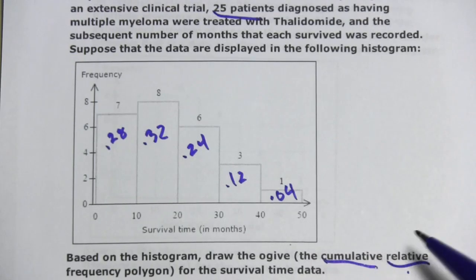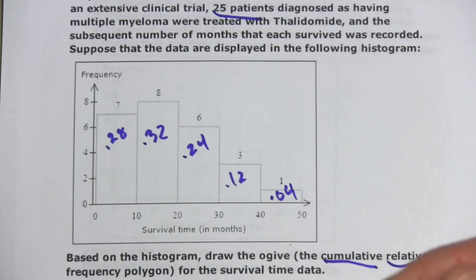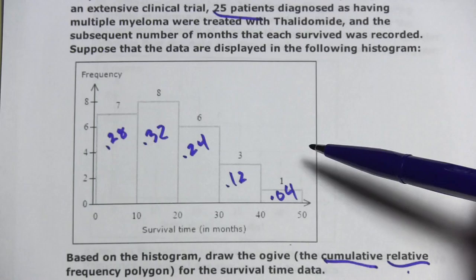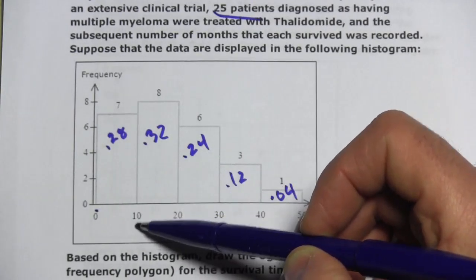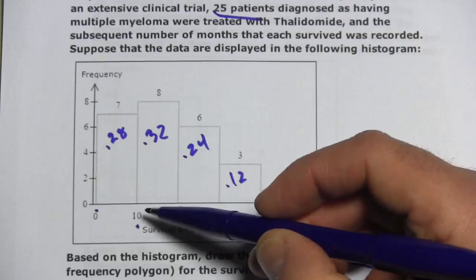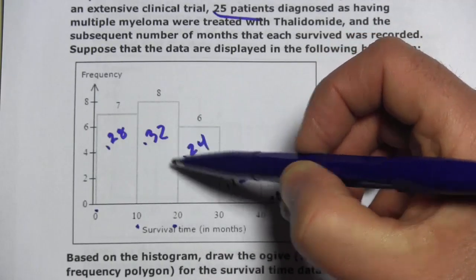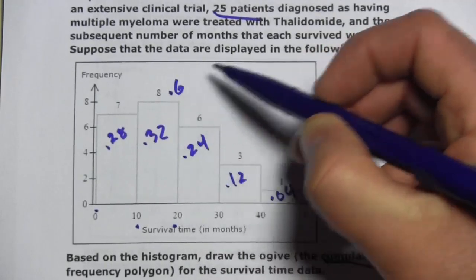Now to do cumulative relative frequency, just like we did with the first one, we're going to add these up as we go along. We start at 0. By the time we get to 10, we're at 0.28. By the time we get to 20, we're 0.28 plus 0.32, which would be 0.6.